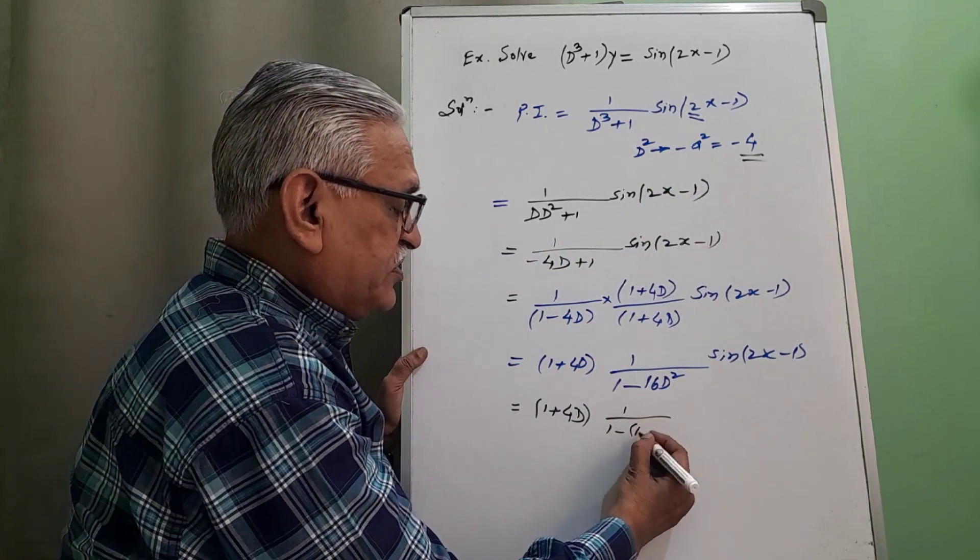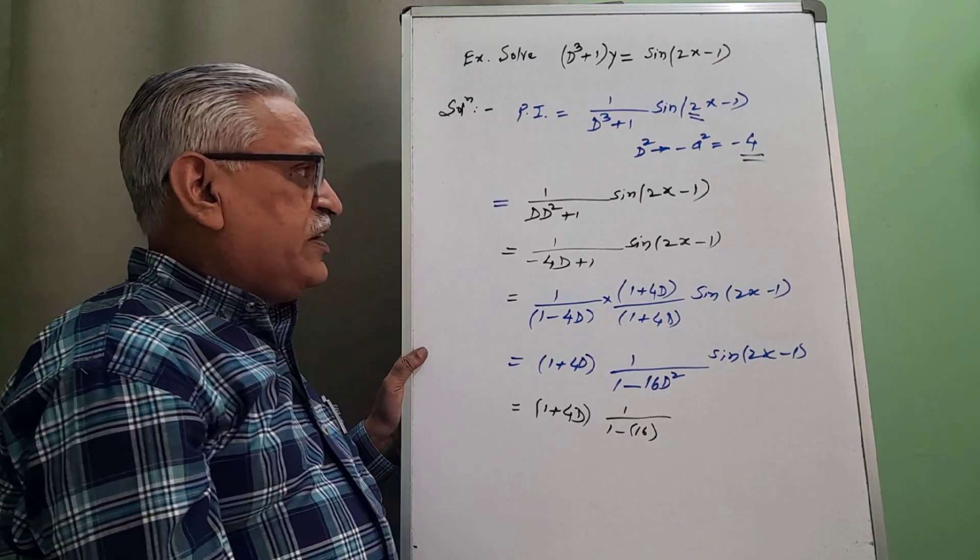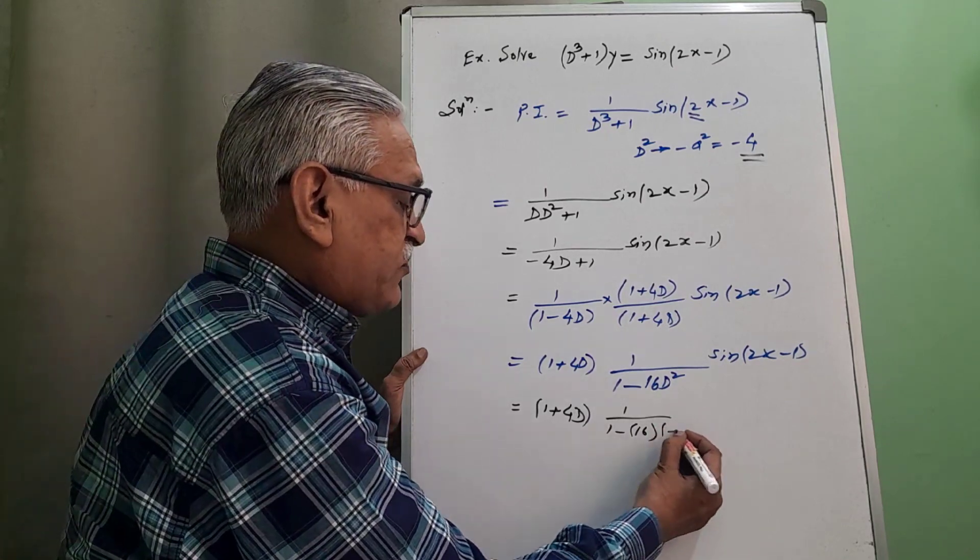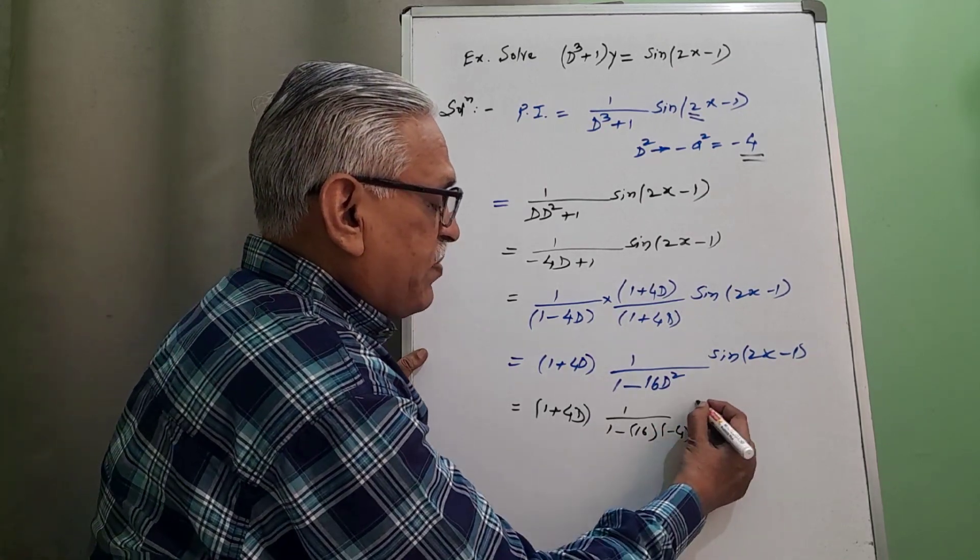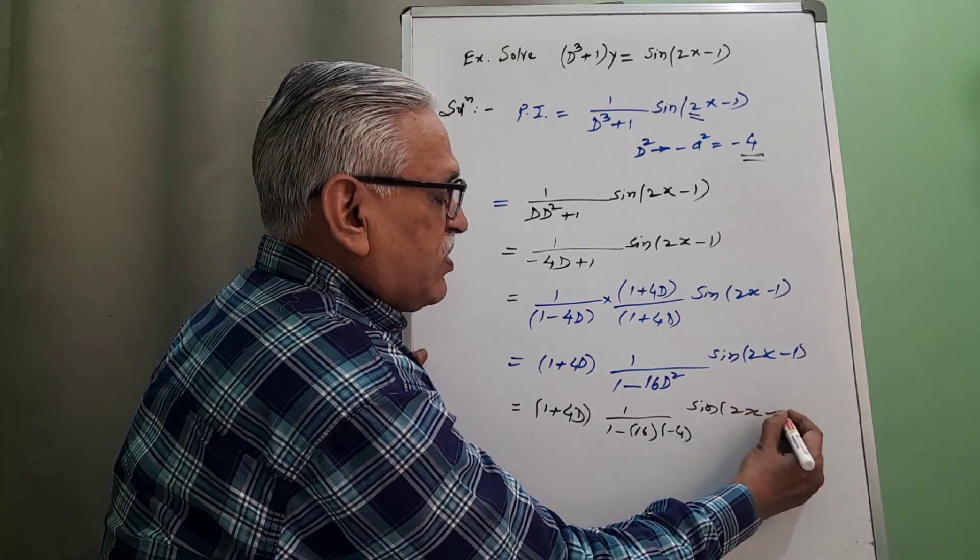Therefore 1 minus, minus it is 16 times this square, this square is replaced by minus 4, operated on sin of 2x minus 1.